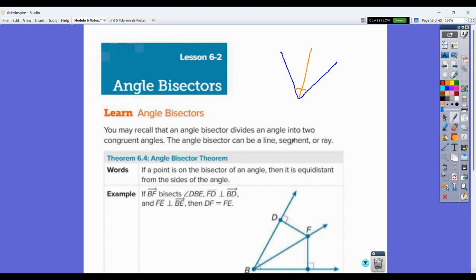An angle bisector can be a line, a segment, or a ray. So you've got the ray, you can continue it as a line, and you can stop it as a segment. Any of those are fine.